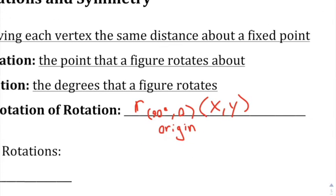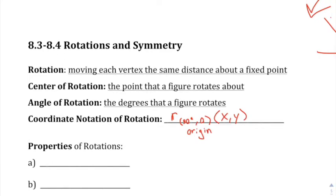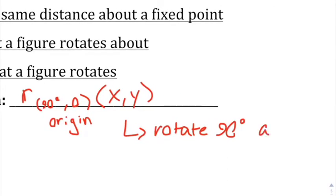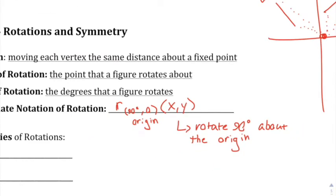You do that for each point X, Y. This notation means rotate 90 degrees about the origin. Unless it says otherwise, most of the time in this class we're going to go counterclockwise — I'll use CCW for that.